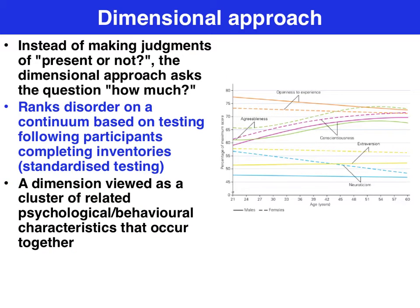So a categorical approach asks the question yes or no, in terms of the presence or absence of a disorder. A dimensional approach asks the question how much, in terms of the severity of the symptoms. A dimensional approach ranks a disorder on a continuum based on testing of participants on their responses to a series of inventories.